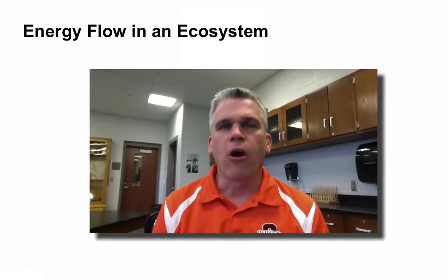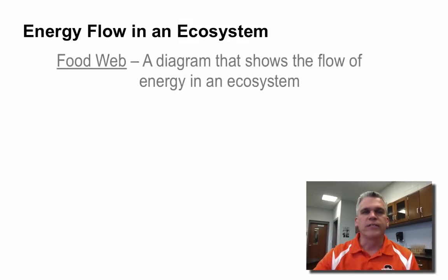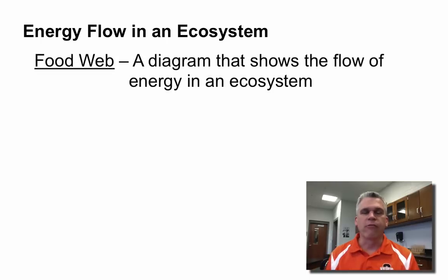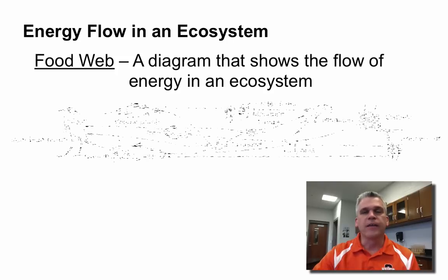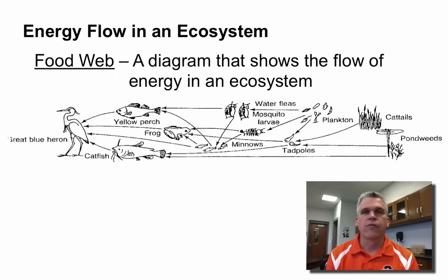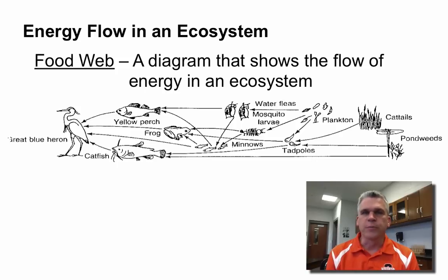This can all be shown in a very simple diagram called a food web. A food web shows us the flow of energy in an ecosystem. For example, here is a food web. What we see are organisms and arrows. The arrows show the direction that the energy is moving.